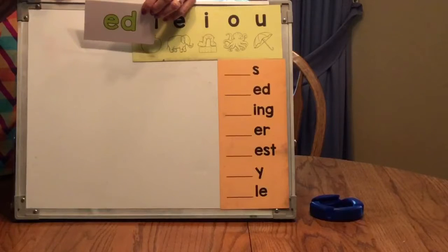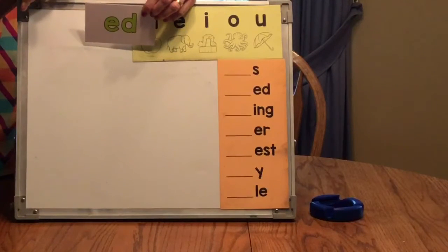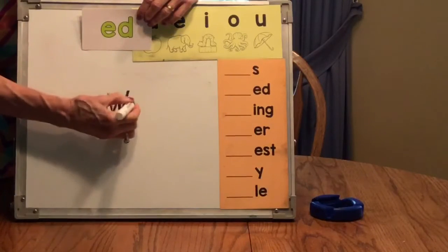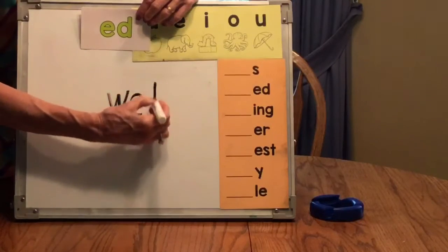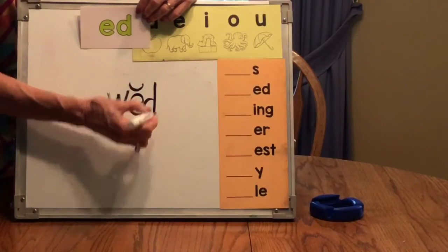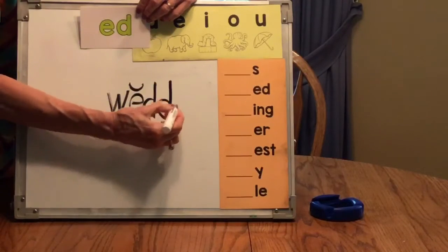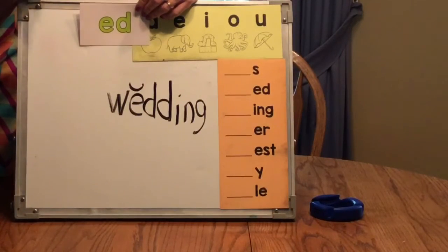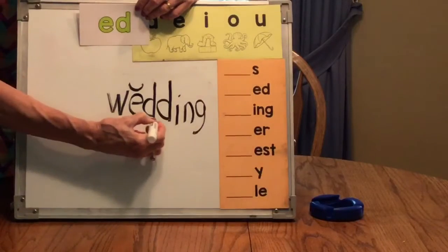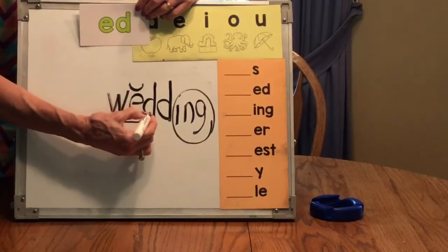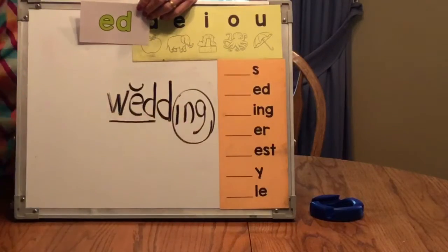The first word I'm going to give you today is going to be wedding. Think to yourself, what's my base word? Write your base word, and then make it wedding. Alright, let's check. The base word was wed. We have wed. I have a short vowel followed by one consonant. What do I need to do? I hope you remembered. Double the consonant and add ing. Wedding.